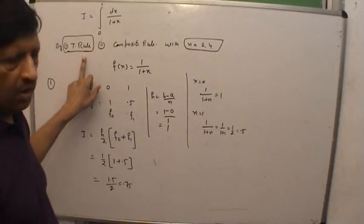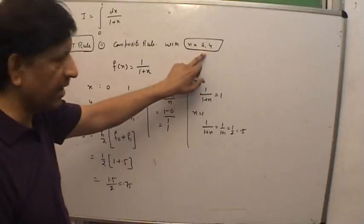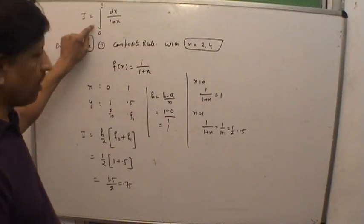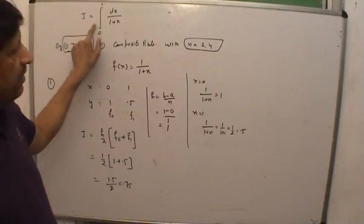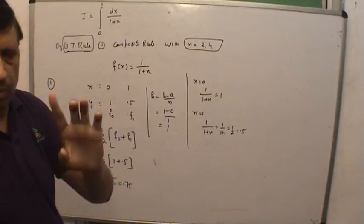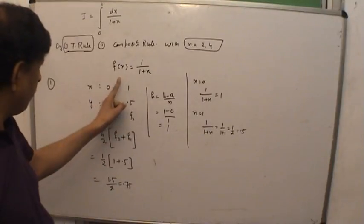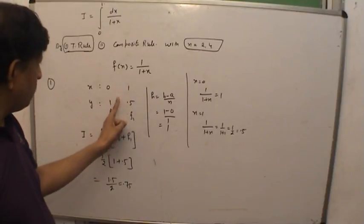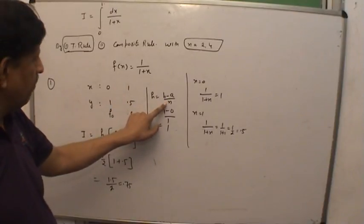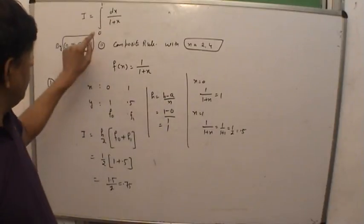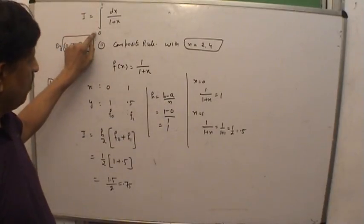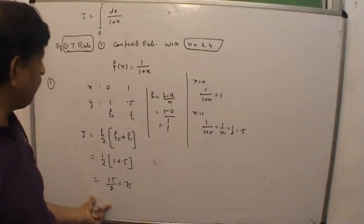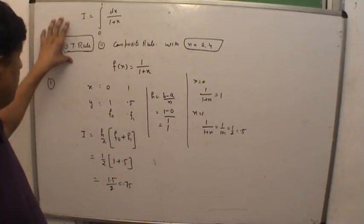In the first case, n is not provided explicitly because the interval is understood to be only 1 — starting at 0 and ending at 1. So n is always equal to 1 here. b is the upper limit and a is the lower limit, and we always find h = 1 for the simple trapezoidal rule.